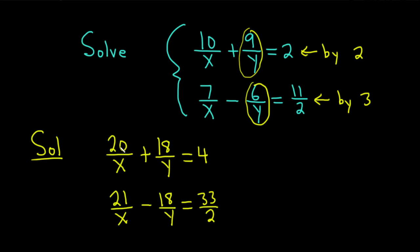Okay, so now we can take these and we can add them. All right, so adding these, let's add. When you add, you get 20 over x plus 21 over x. That's going to give us 41 over x. These cancel. And then we get 4 plus 33 over 2. So we have to think about how to add that. You can think of 4 as 8 over 2. So 8 over 2 plus 33 over 2 is 41 over 2.